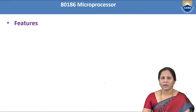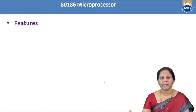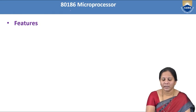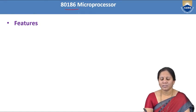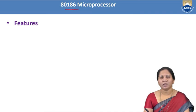Before going to the advanced microprocessor, we need to discuss about the first advanced microprocessor that came into existence after the 8086 microprocessor. The first microprocessor after 8086 is the 80186 microprocessor, and all these come under the Intel family. While discussing about the advanced microprocessor, we should know in what aspects these are advanced compared to 8086.